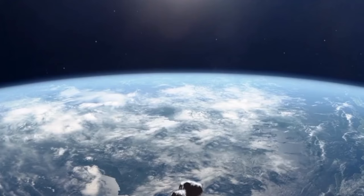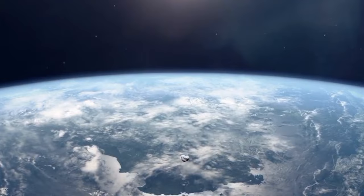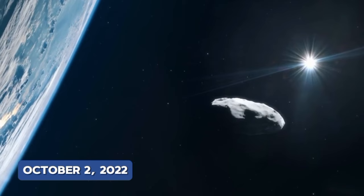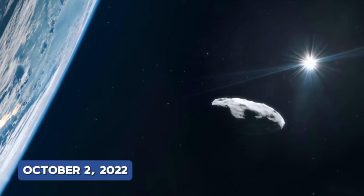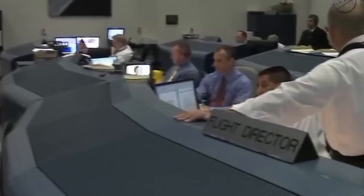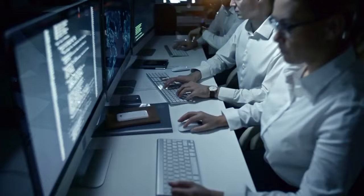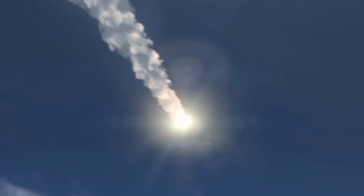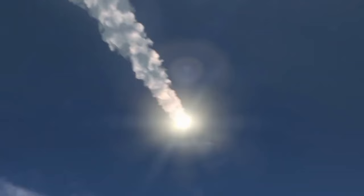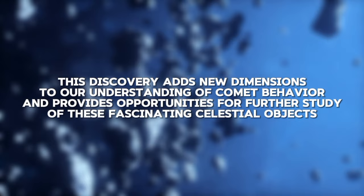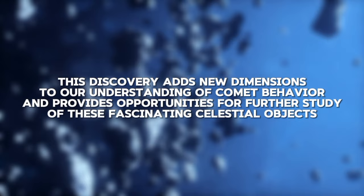Subsequently, the comet was observed during its apparitions in 2010, 2016, and 2022, further solidifying its identity and trajectory. In a noteworthy development on October 2, 2022, astronomers announced the discovery of a new fragment of the comet. This fragment, designated as fragment B, has a smaller orbit compared to the primary fragment. Based on orbital calculations, fragment B is expected to reach its closest point to the Sun, known as perihelion, in March 2028. Following this, the primary fragment is projected to reach perihelion in May 2029, approximately one year, two months, and 11 days later. This discovery adds new dimensions to our understanding of comet behavior and provides opportunities for further study of these fascinating celestial objects.